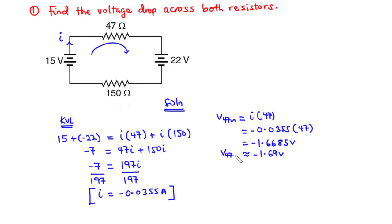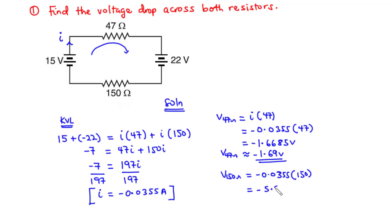That is the voltage drop across the 47 ohm resistor. For the 150 ohm resistor, the voltage drop is I times 150, which is negative 0.0355 times 150, giving us approximately negative 5.33 volts. Adding these two voltage drops — negative 1.69 plus negative 5.33 — should equal the net source voltage of 15 plus negative 22, which is negative 7 volts.